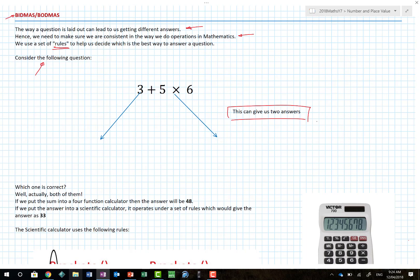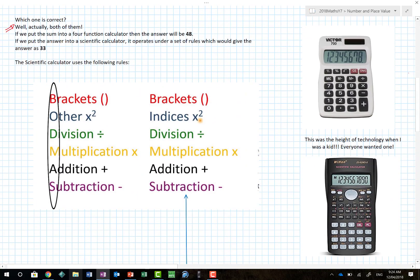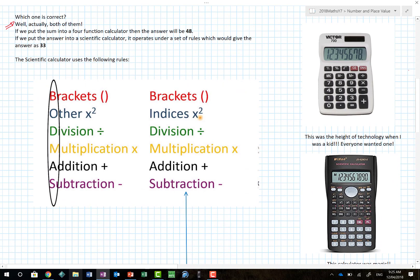But the two answers this could give me are 48 or 33. Now you're gonna say hold on a moment, how can you give me 48 or 33? Which one is correct? Well sort of both of them. If we put that into our calculator then we'll actually end up with 48 as one of the answers and 33.